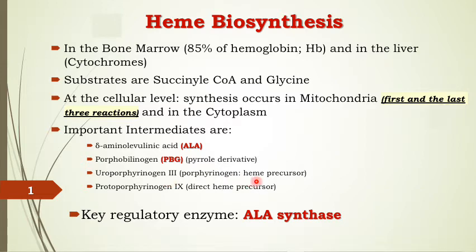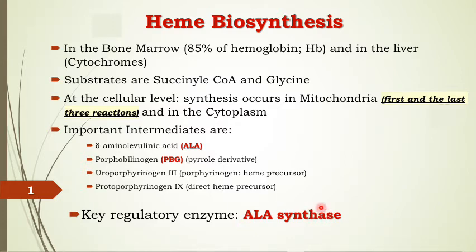Uroporphyrinogen III is an indirect heme precursor; protoporphyrinogen IX is the direct heme precursor. We will understand what indirect and direct mean during the steps of biosynthesis. The key enzyme or regulatory enzyme in any metabolic pathway is usually the first enzymatic reaction — here it is the ALA synthase enzyme, which occurs in the mitochondria.